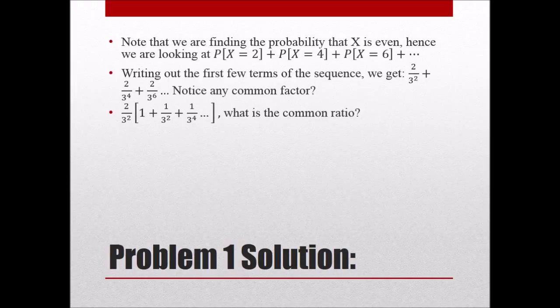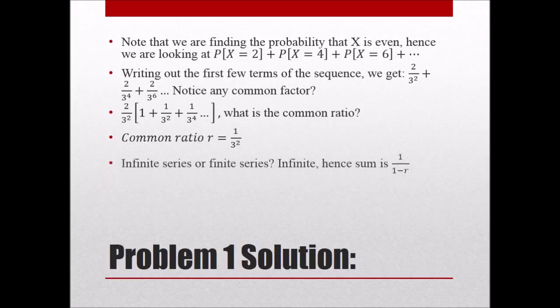We're going to take 1 over 3 squared divided by 1, giving us a common ratio of 1 over 3 squared. Now the next question we want to ask ourselves is, is this infinite or finite?